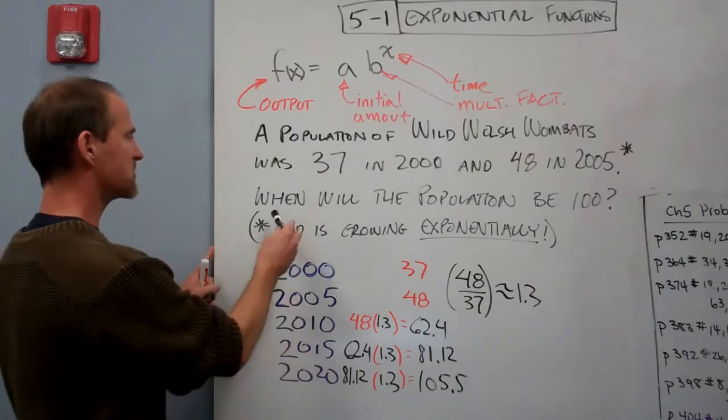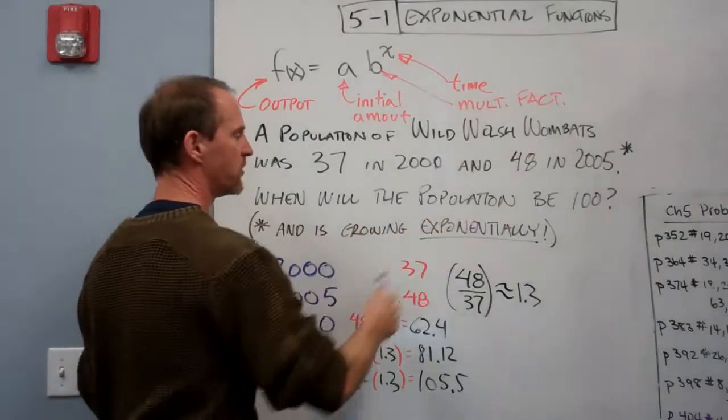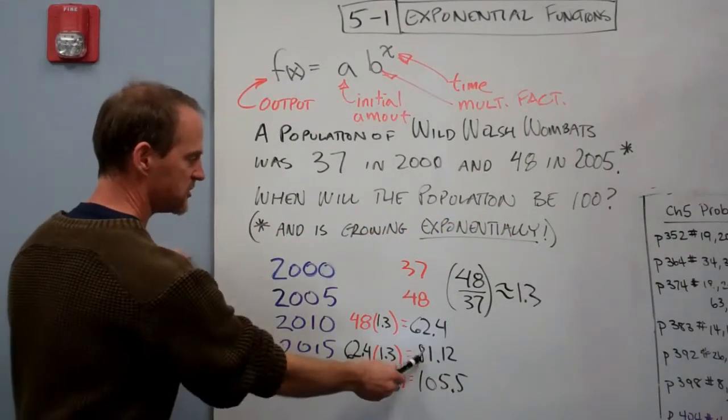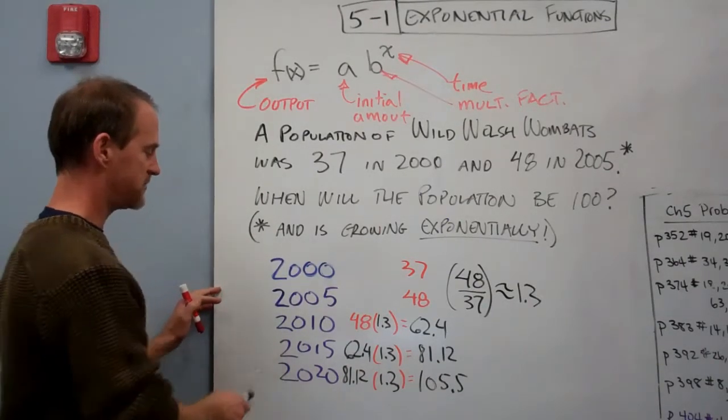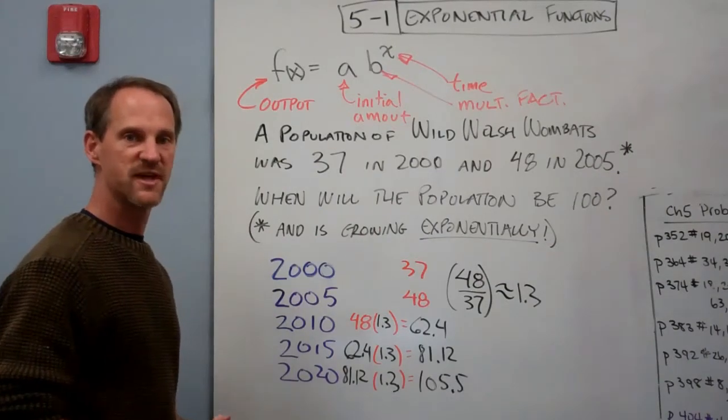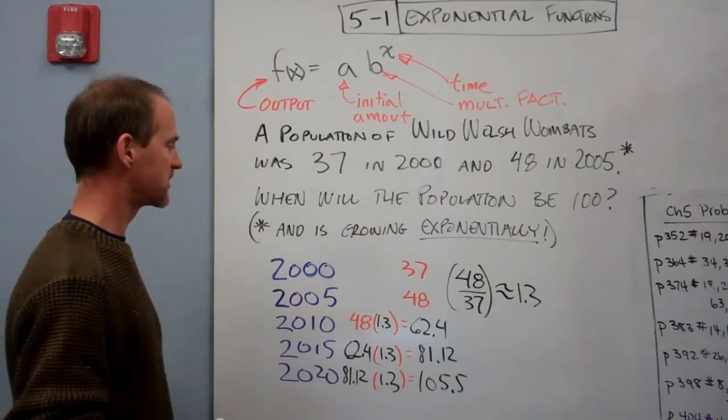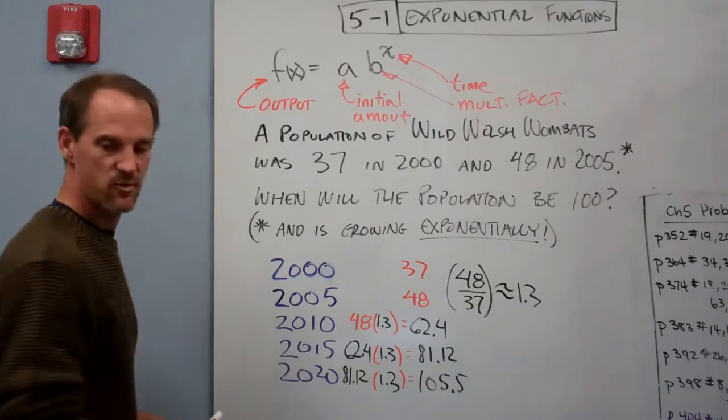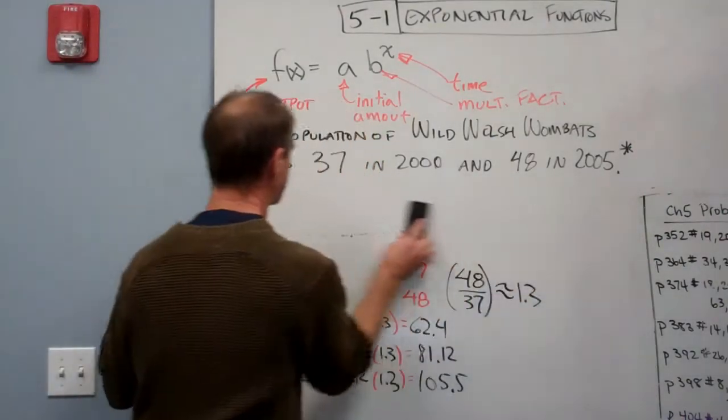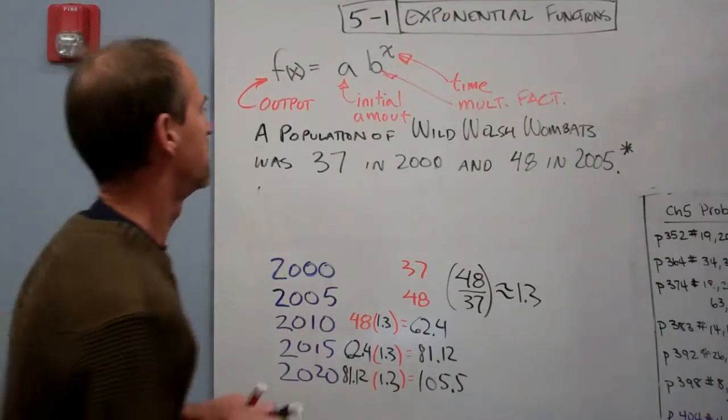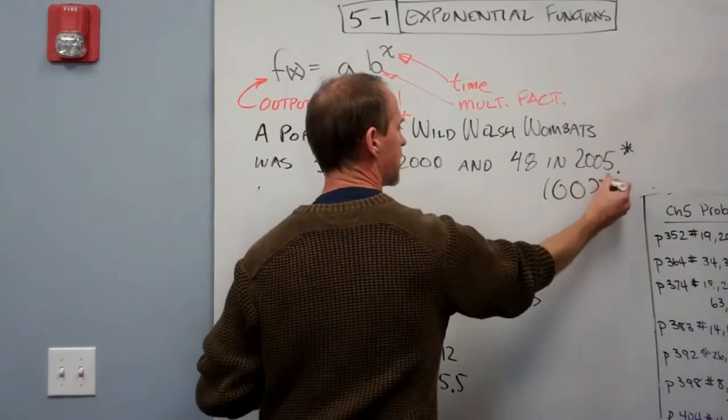So what do I do? Well, I want to answer the question, when will the population be 100? I can use a process called interpolation, and I can say it's going to be somewhere in this time period, but I can find a more precise answer by writing an equation. So the way we write an equation here is I'm going to go back to clear off the board a little bit. I want to find out when it gets to 100.